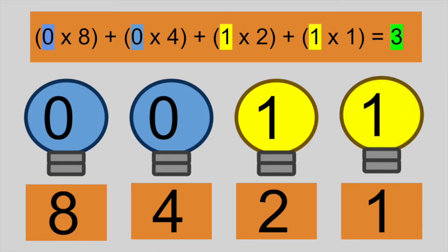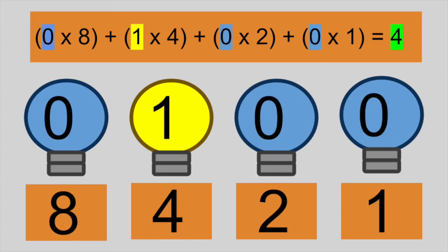To represent the value 4, we turn on the third bulb only. What we have now is 1 times 4 plus 0 times 2 plus 0 times 1, so just 4.